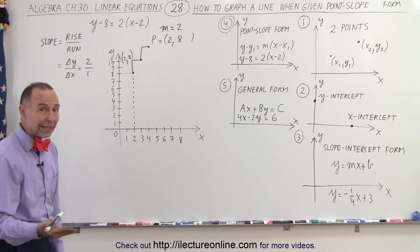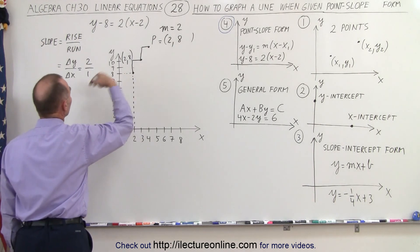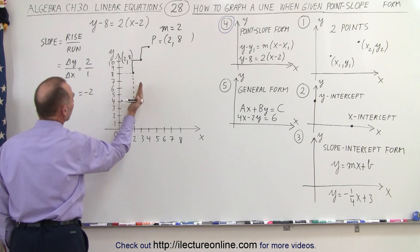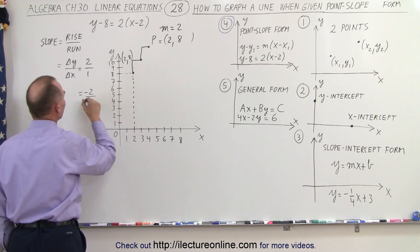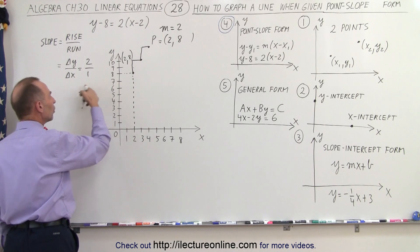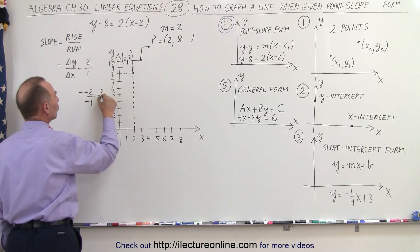I can also go in the other direction. So instead of going up, I can go down, but of course down, that's equal to a negative 2. And then I can go to the left instead of the right, that's equal to negative 1. So I can go down 2 and to the left 1, and notice that ratio is still the same as 2 over 1.